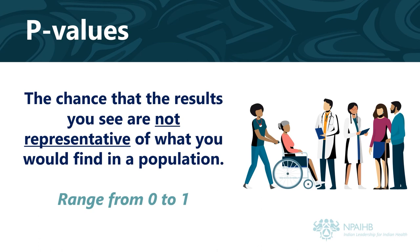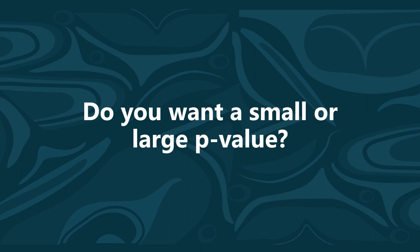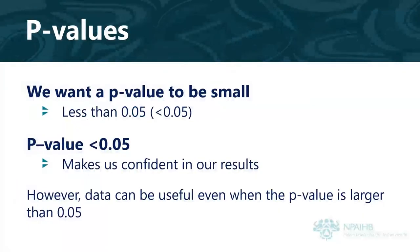P values, like confidence intervals, are a common way to decide if data results are due to something real happening in the population rather than chance. A p value represents the chance that the results you see are not representative of what we would find in the population. P values range from 0 to 1. Since we want our results to be representative of what you would generally find in the population, we want a small p value. A small p value — generally less than 0.05 — makes us confident in our results. However, as with confidence intervals, there are no hard and fast rules; data can be useful even when the p value is larger than 0.05.